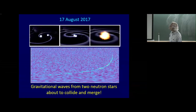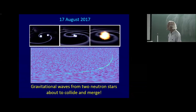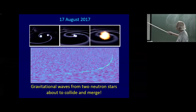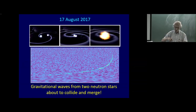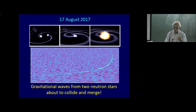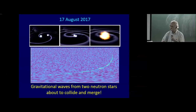On the 17th of August two years ago, gravitational waves were detected from two neutron stars almost about to merge. We didn't detect the gravitational waves as the neutron stars actually merged because the LIGO detector is not yet capable of detecting the actual merger, but they would have merged in a millisecond or a couple of milliseconds.